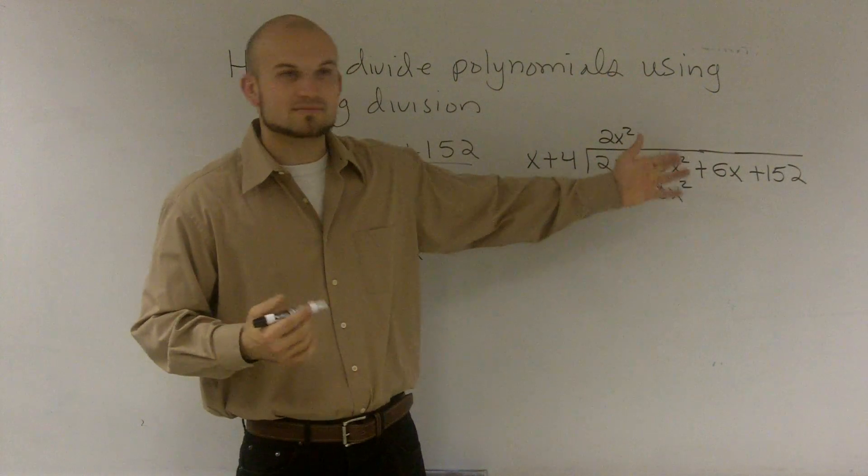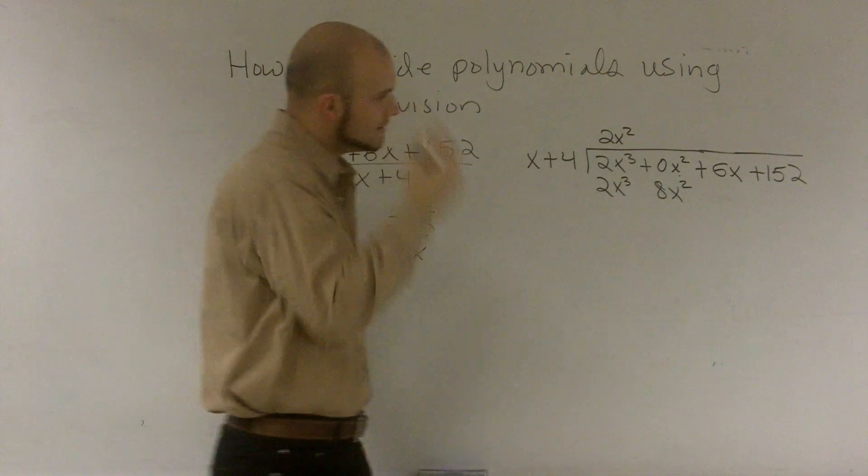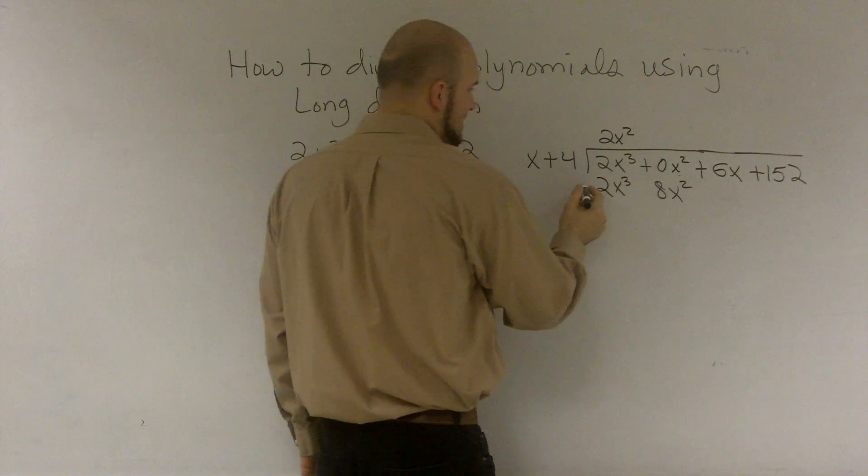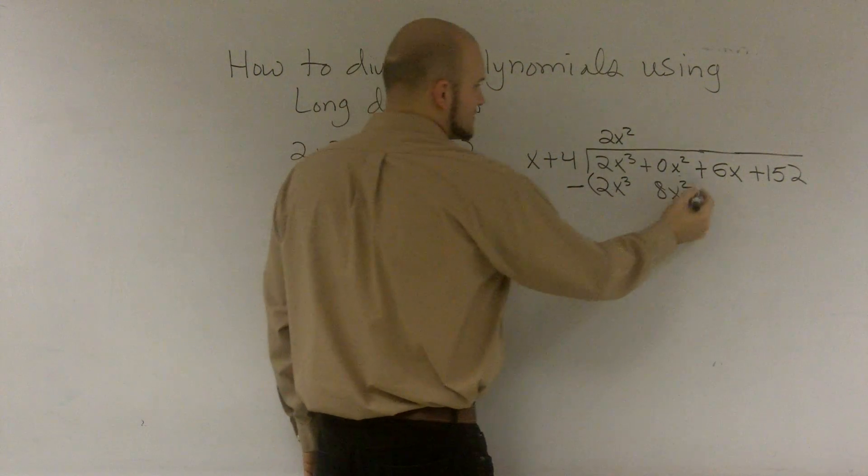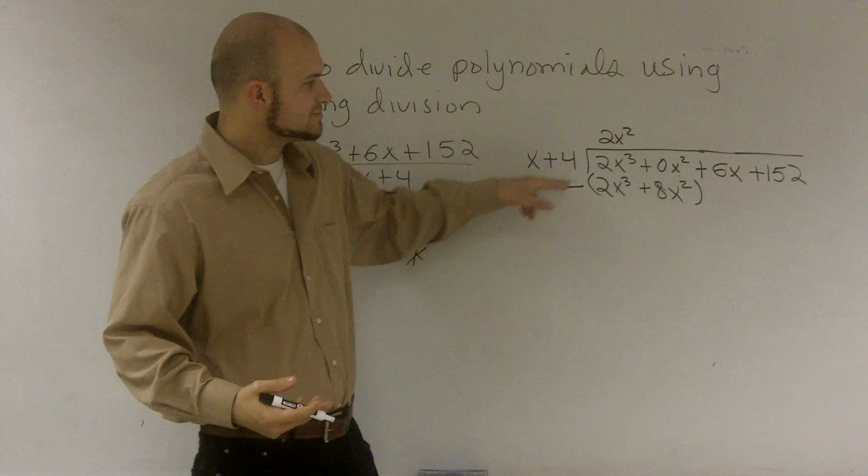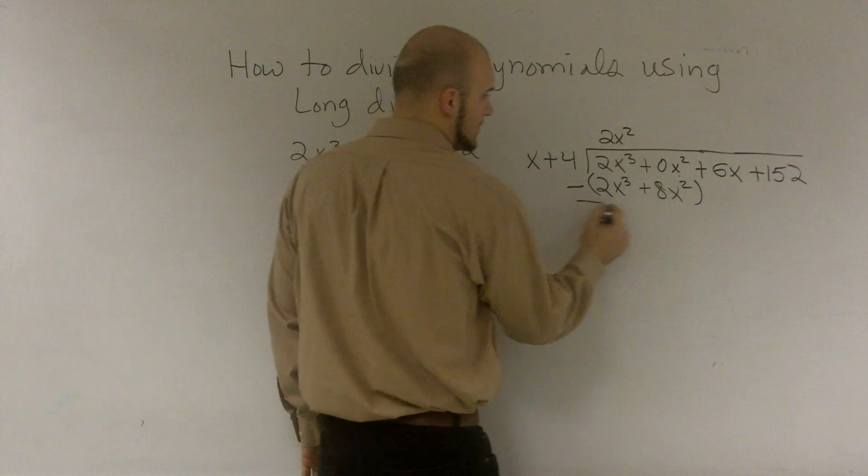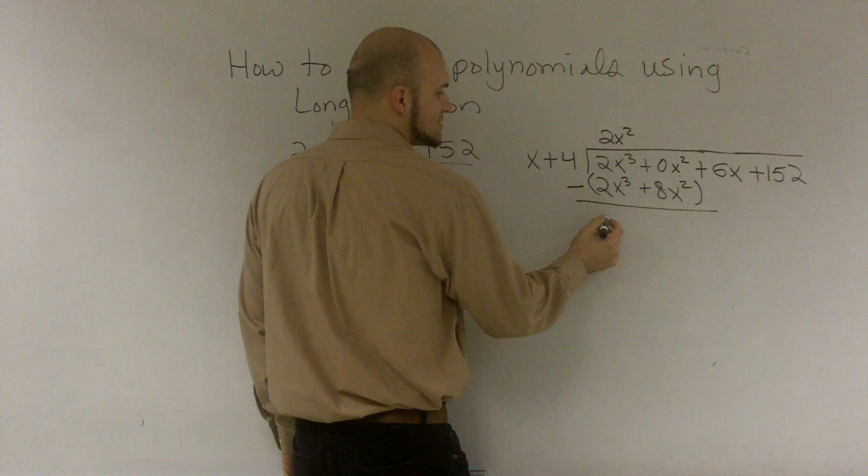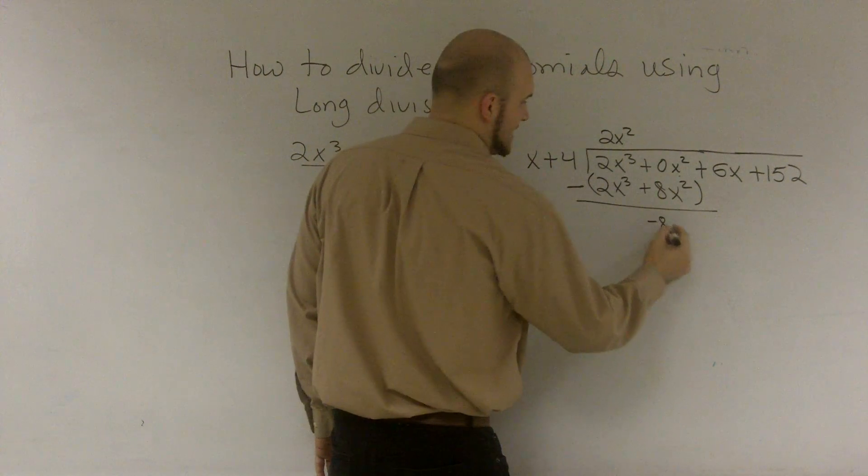Because essentially 0 times x squared is 0x squared. Now what we have to do is we have to subtract. And remember we're subtracting this whole line. So I'm going to put parentheses around it just so you guys can remember that you have to subtract each and every term. So therefore now I obtain, that becomes a 0x cubed, which is going to become 0, and this becomes a negative 8x squared.